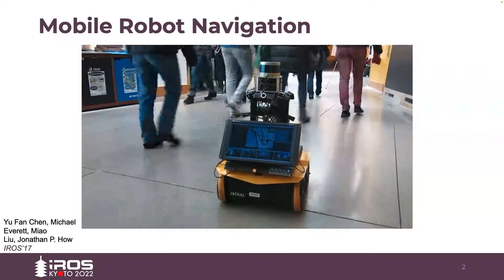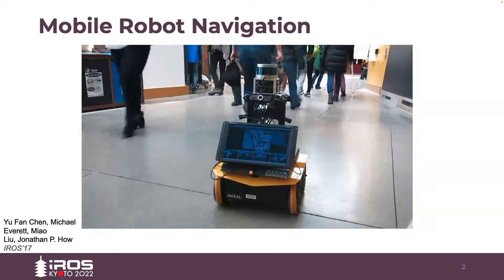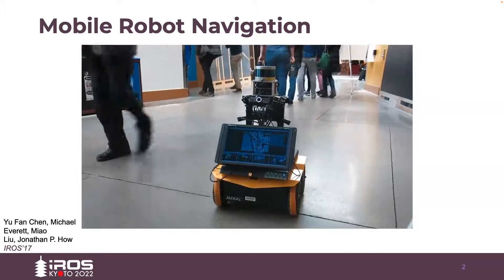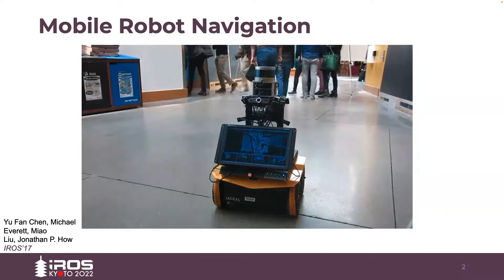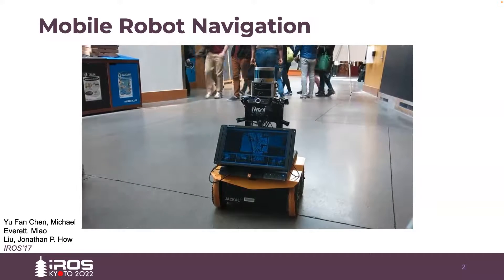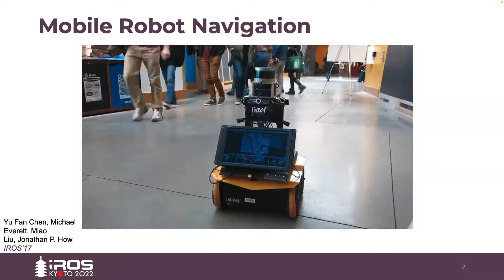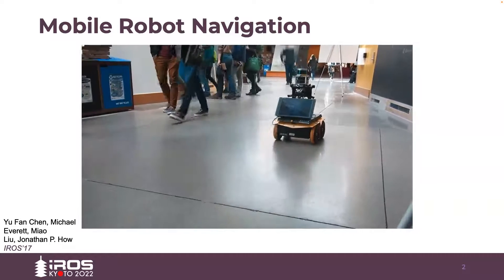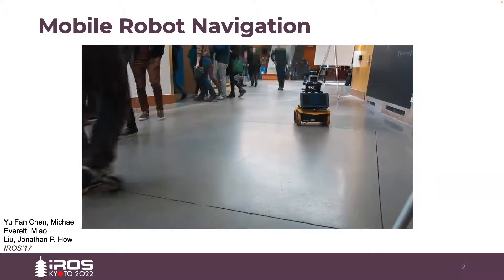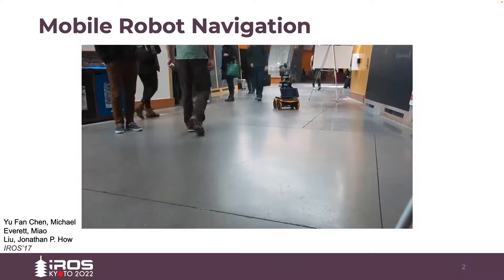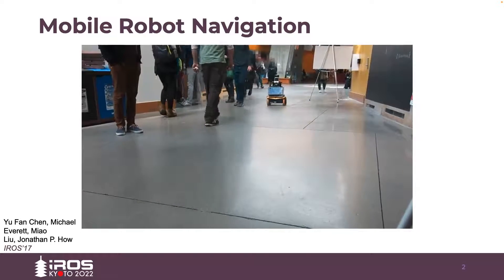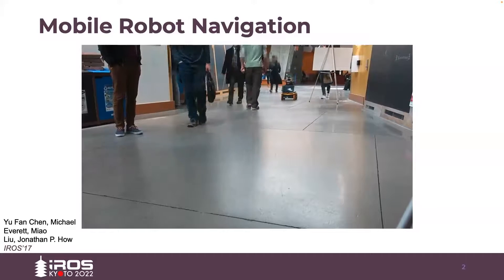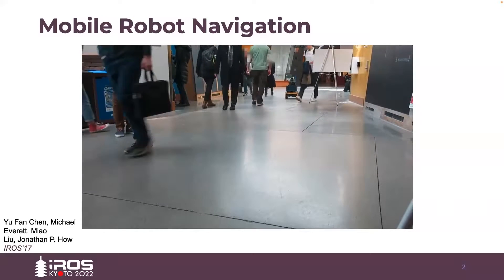In the past, the majority of mobile robot navigation research has been focused on obstacle avoidance, from standard graph-based to reinforcement learning-based methods. Fast planning to avoid static or moving obstacles has been developed very successfully, as you can see in this video.